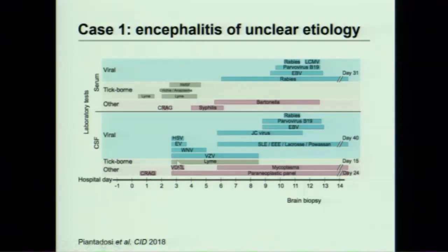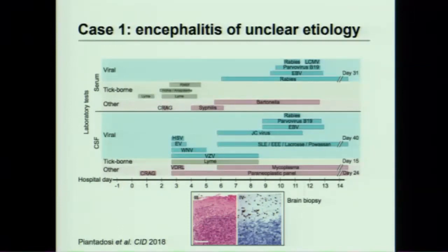This schematic shows all the tests sent by the clinical team. On the x-axis is hospital day; each bar is a different clinical test individually thought of, ordered, and sent. The beginning of each bar is when the test was ordered; the end is when results returned. Some things returned negative quickly, like herpes simplex virus and enterovirus PCR. Others like Bartonella, rabies, and JC virus took quite a bit longer. For this patient, everything was coming back negative. On hospital day 11, he underwent a brain biopsy showing some inflammation, and all organism-specific staining came back negative as well.